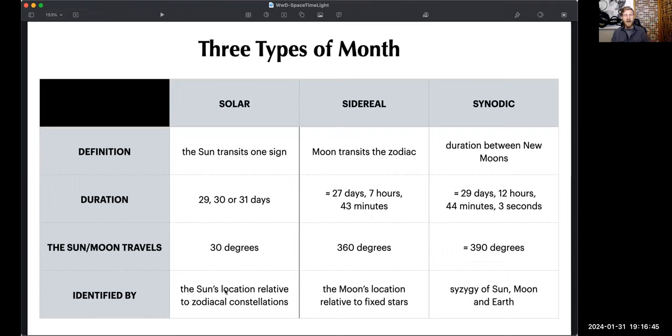So the sun travels 30 degrees identified by the sun's location relative to the zodiacal constellation. So yeah, the sun is about halfway through Capricorn right now in the sidereal zodiac.